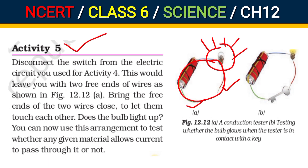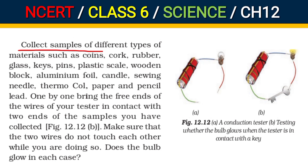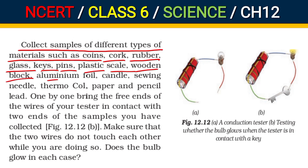This means you can use this setup to check whether different materials allow current to pass through them or not. Collect samples of different types of materials such as coins, cork, rubber, glass, key, pin, plastic, scale, wooden block, aluminum foil, candle, sewing needles, thermocol, paper, pencil lead.